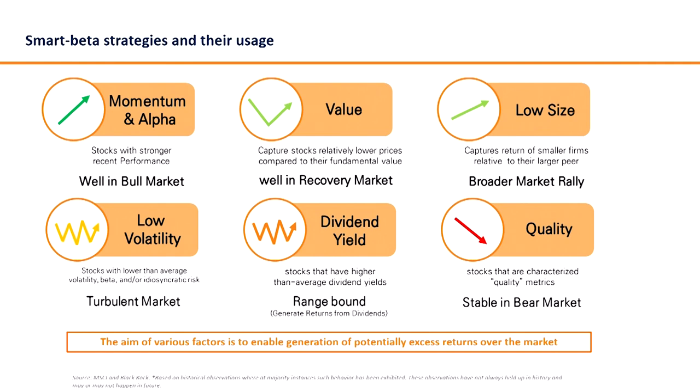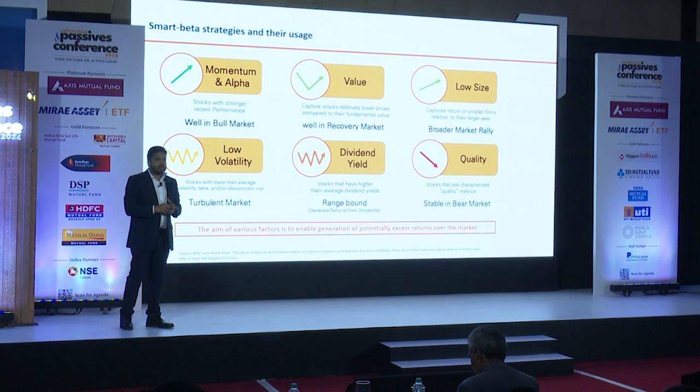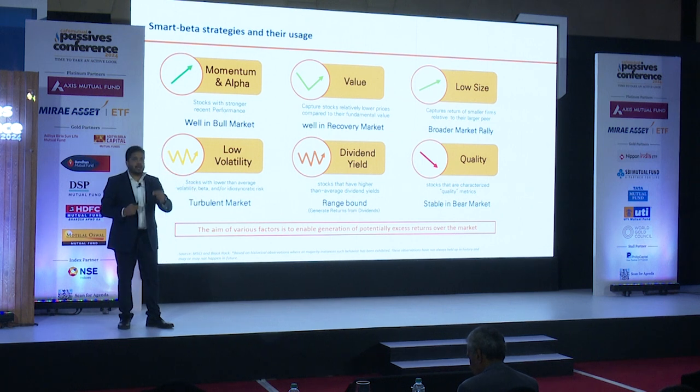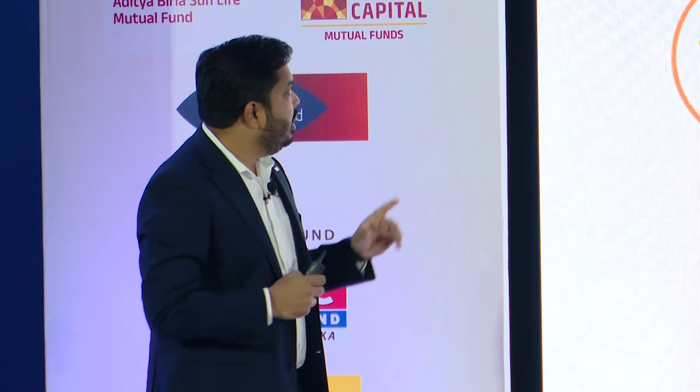Now there are several factors. Full research has been done on them, and it has been shown that across market cycles, certain factors generate a risk premium and target a certain behavior. Can these factors be quantified into a framework, structured into a method, and launched as a passive product? And that is where several factors were identified. There is no rocket science in it — it is pretty intuitive. So we have momentum, also called alpha.